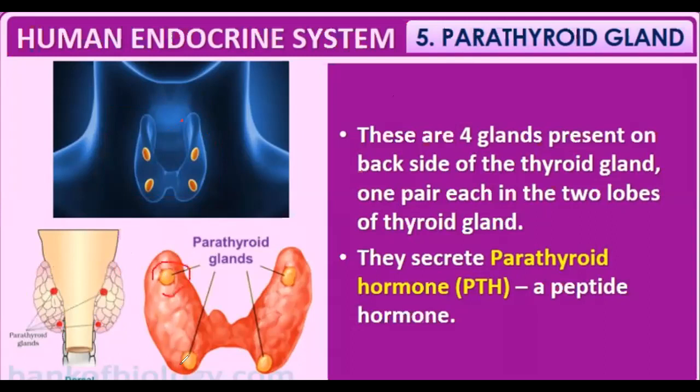There are four parathyroid glands: the first, second, third, and fourth. The parathyroid glands secrete the parathyroid hormone (PTH). PTH works opposite to thyrocalcitonin — while thyrocalcitonin lowers the calcium level in the blood, the parathyroid hormone raises the calcium level in the blood.